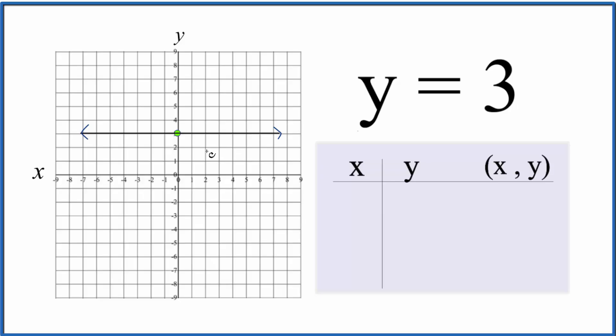We cross the y-intercept at 3, and the slope, because it's a horizontal line, is 0. Let's put some values in and see what happens. We know that y is always going to be 3, so for any value of x, we'll have y equals 3.